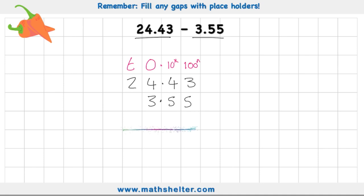Now I can put my answer row, subtraction, and I'm ready to begin. But again, remember, fill any gaps with placeholders. I can see I have a gap just here and I'm going to populate it with a zero. And again, I'm going to start my question with the smallest value, which in this case is my hundredths.